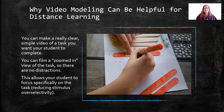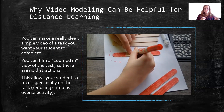When making videos for distance learning, we want to focus on making the video really clear and really simple to show a task that we want the student to complete. Like we talked about with stimulus overselectivity, we can zoom in so there is a really clear view of the task with no distractions. This allows the student to focus specifically on that task, which reduces the stimulus overselectivity problem.